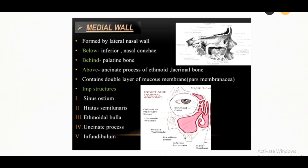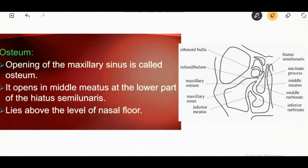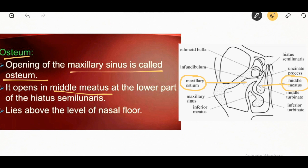The medial wall is formed by the lateral nasal wall. Below is the inferior nasal concha, behind is the palatine bone, and above is the uncinate process of the ethmoid and the lacrimal bone. Important structures are the hiatus semilunaris, sinus ostium, ethmoidal bulla, uncinate process, and the infundibulum. The opening of the maxillary sinus is known as the ostium. The maxillary sinus opens into the middle meatus at the lower part of the hiatus semilunaris, and it lies above the level of the nasal floor.